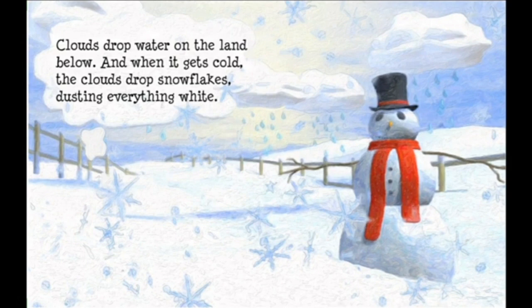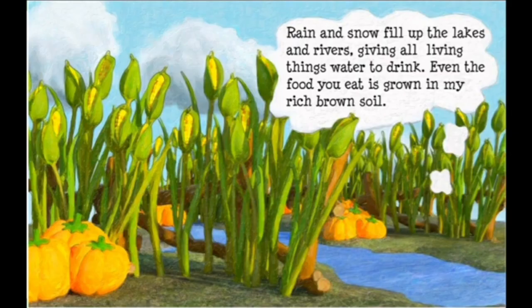'The white is from the clouds and snow.' Clouds drop water on the land below, and when it gets cold the clouds drop snowflakes, dusting everything white. Did you know no two snowflakes ever have the same pattern? They might look very similar, but they're never the same.